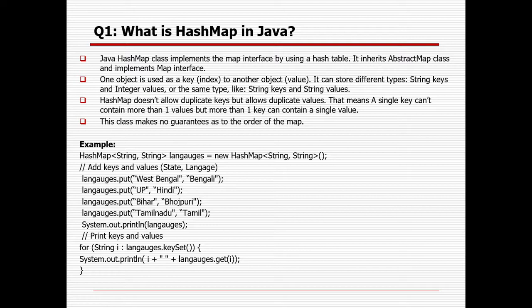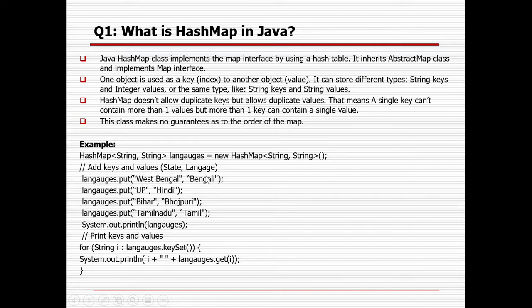HashMap makes no guarantee as to the order of the map. As and when you insert data and retrieve it, order will not be maintained. For the HashMap syntax, you use the HashMap keyword with data types for key and value. Then create an object using the new keyword, and use the put method to add keys and values.